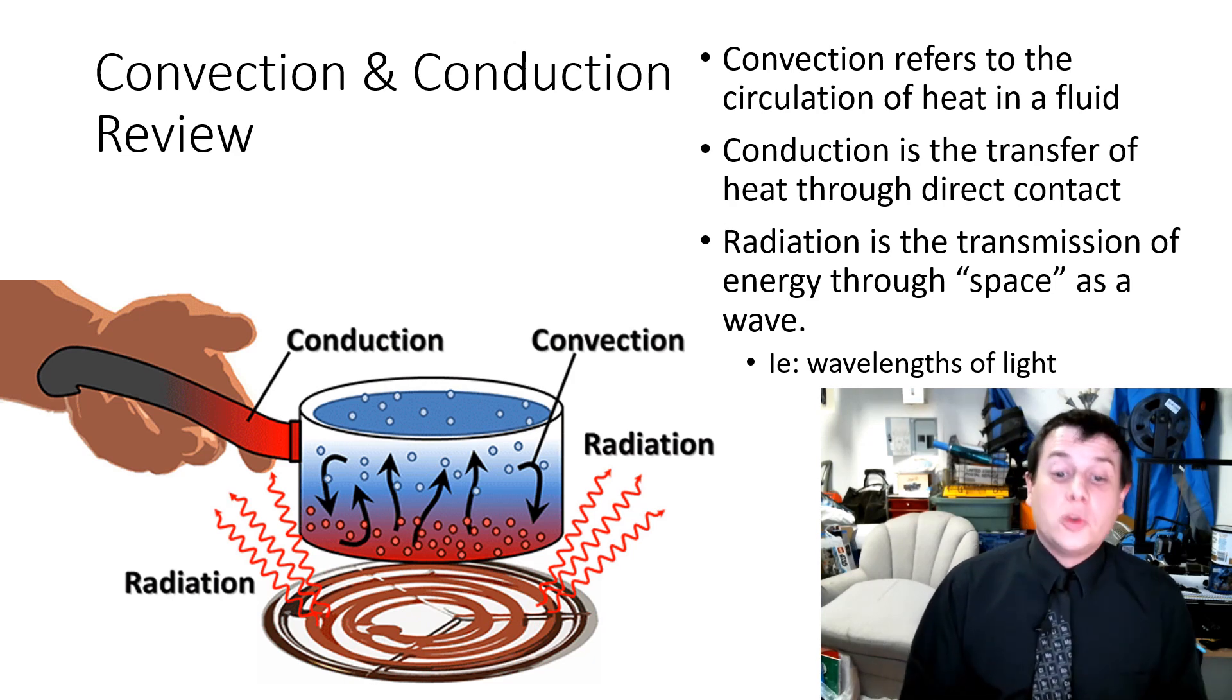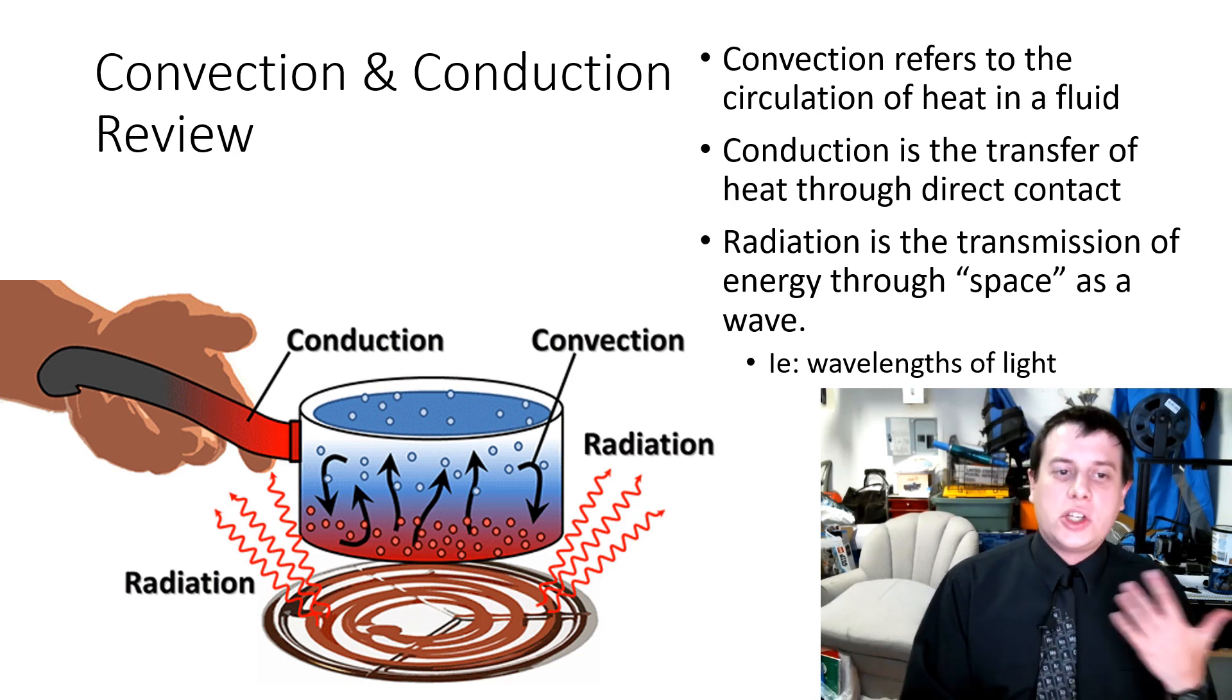Conduction would be how you burn your feet if you walk outside without shoes to go to the pool. Radiation is how you can notice that it is much hotter when you're out in the sunlight versus in the shade. And then convection, that would be if you hop into the pool and you notice it's kind of warm on the surface, but the bottom of the pool is nice and cool. But as things happen, it starts to circulate.